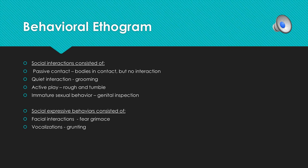The social expressive behaviors were broken down into two sections: facial interactions and vocalizations. Vocalizations included grunting, specific calls, and any noises of that nature. These are just examples of some of the behaviors and interactions observed; there was a long list of many other behaviors on the standard 30 that they tracked.